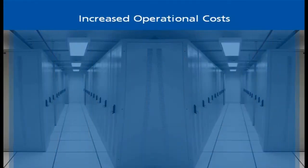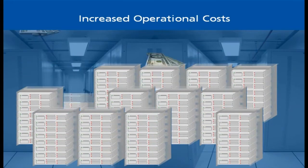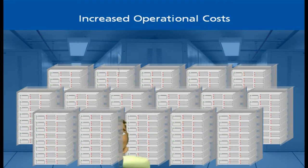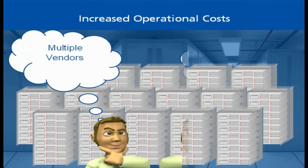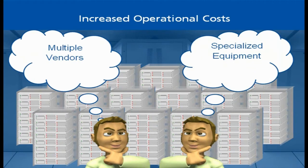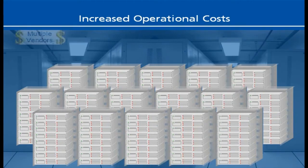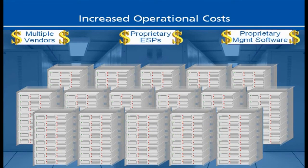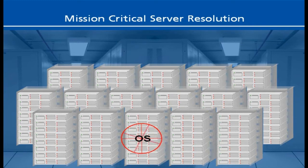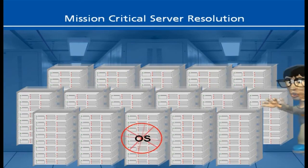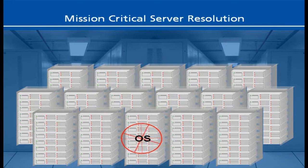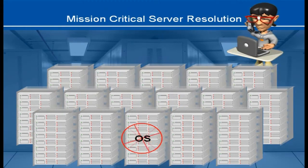Increased operational complexity is one of those soft costs that could be small or it could be job-threateningly huge. Despite the desire to reduce vendors, there'll always be the need to purchase specialized equipment and a typical IT operation will always have multiple vendors. But when you have multiple vendors, each with their own proprietary ESPs and proprietary management software, that complexity can quickly become dangerous. When you're having a problem with a mission-critical server, you need to access and repair it as soon as possible. First, you need to access the correct software that controls that ESP, and hopefully you or your on-hand staff will have learned how to use all the different ESP software packages in your data center.